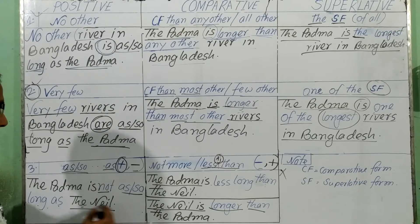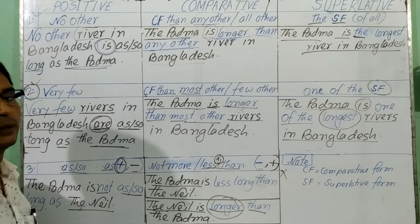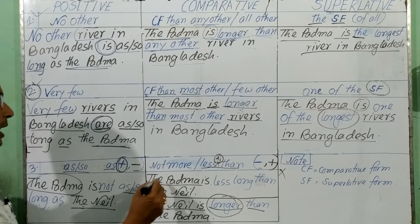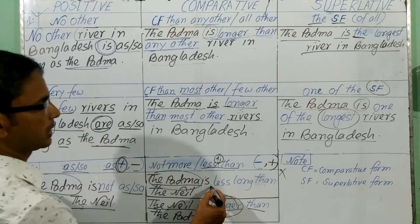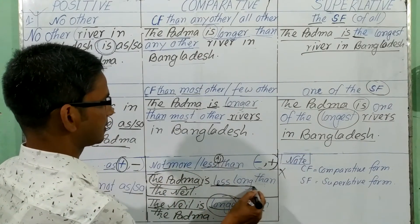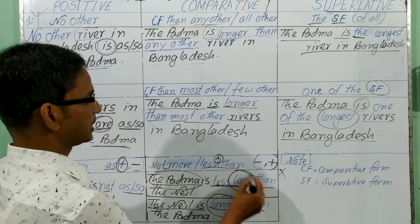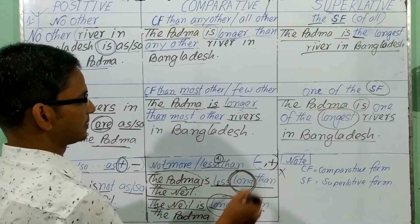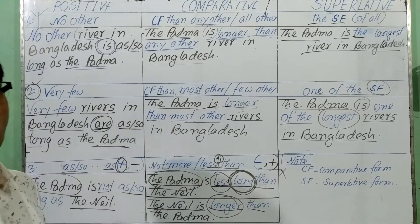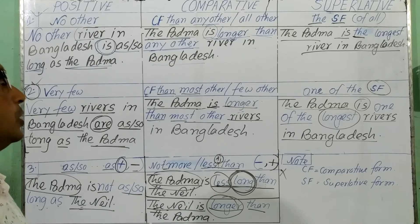And if you write the other subject first, you will have to use the comparative form. If you use the Padma as the subject, you will have to not use that and can only use 'less' or 'more than.' You will have 'less long' — the form will not be changed. If 'less' or 'more' is used, it indicates a comparative form. So I hope that it will be clear to you.